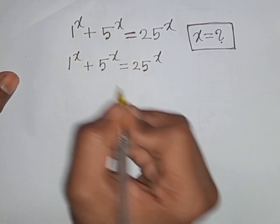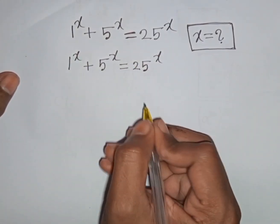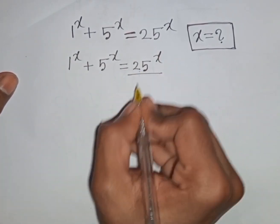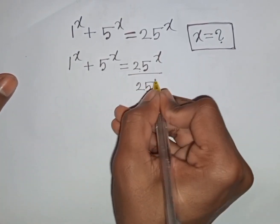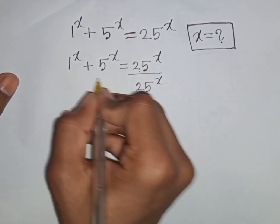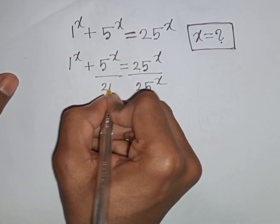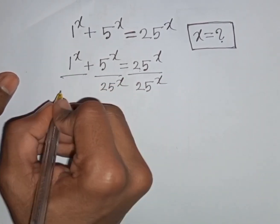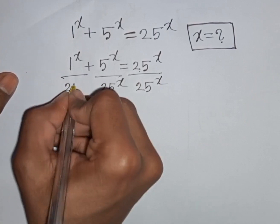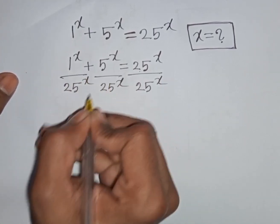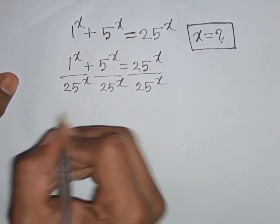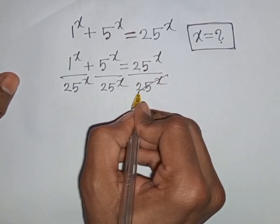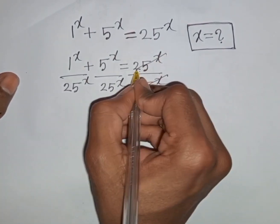Now we divide both sides by 25^x. So divided by 25^x on both sides. This 25^x will be cancelled on the right side.